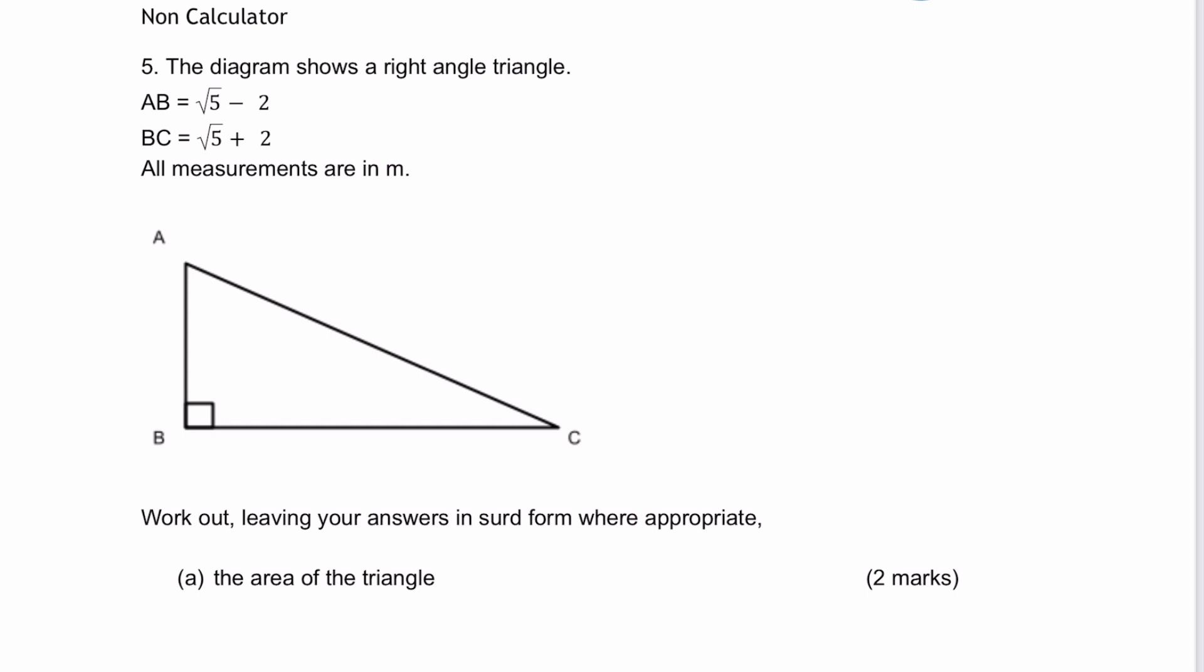It is important to point out this is a non-calculator question. It says the diagram shows a right-angled triangle. So while I'm thinking about right-angled triangle, I'll be thinking about things like Pythagoras and SOHCAHTOA and that sort of thing. And it says the length of AB is root five minus two. So I'm just going to add that in, root five minus two.